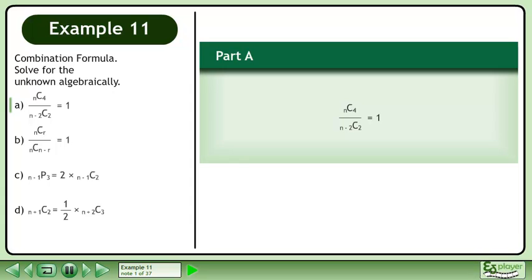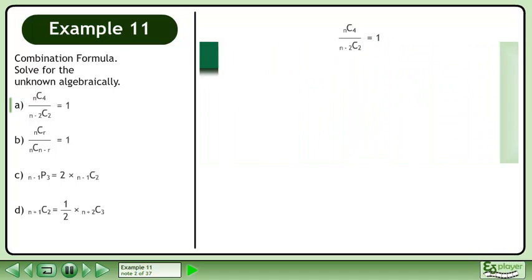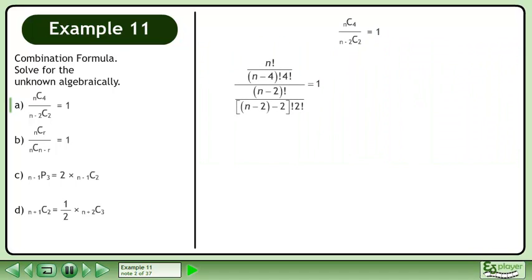In Part A, find n in n choose 4 over n minus 2 choose 2 equals 1. Expand the numerator and denominator using the combination formula.